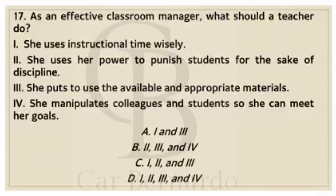Number seventeen: As an effective classroom manager, what should a teacher do? Number 1: She uses instructional time wisely. Number 2: She uses her power to punish students for the sake of discipline. Number 3: She puts to use the available and appropriate materials. Number 4: She manipulates colleagues and students so she can meet her goals. Letter A: 1 and 3. Letter B: 2, 3 and 4. Letter C: 1, 2 and 3. Letter D: 1, 2, 3 and 4. Answer: Letter A, 1 and 3.